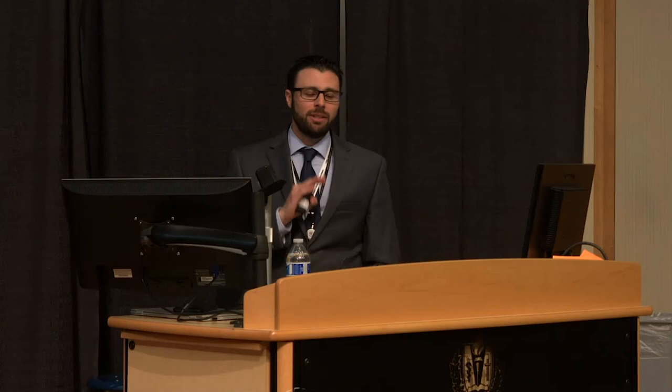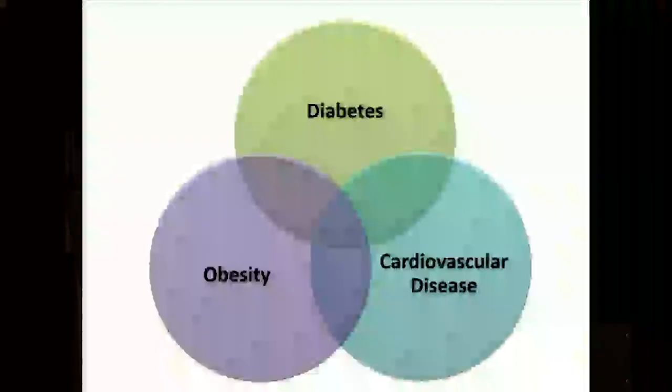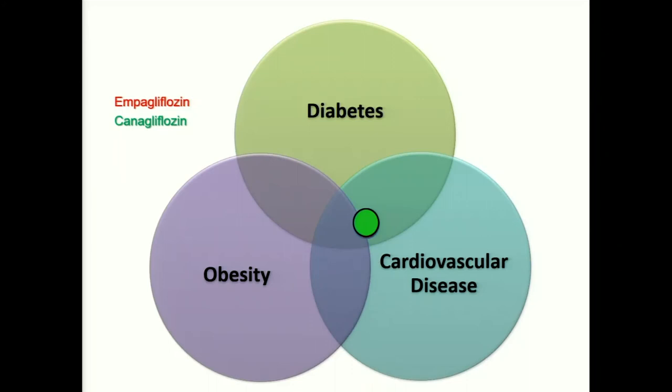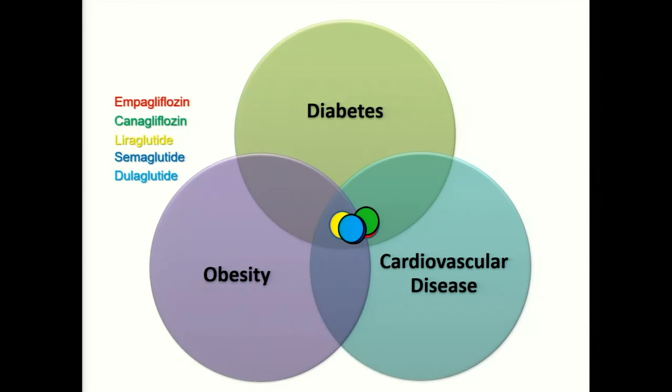These medications work very little if there's no activity at all — anecdotally, if a patient takes the medication and adjusts their diet but doesn't exercise, the weight loss is significantly lower than if they go for a walk. Looking at our unholy trinity: empagliflozin sits right in the middle, a little more toward the cardiovascular side. Canagliflozin similarly. Liraglutide sits in the middle, perhaps more toward the obesity side. Semaglutide and dulaglutide also right in the middle.